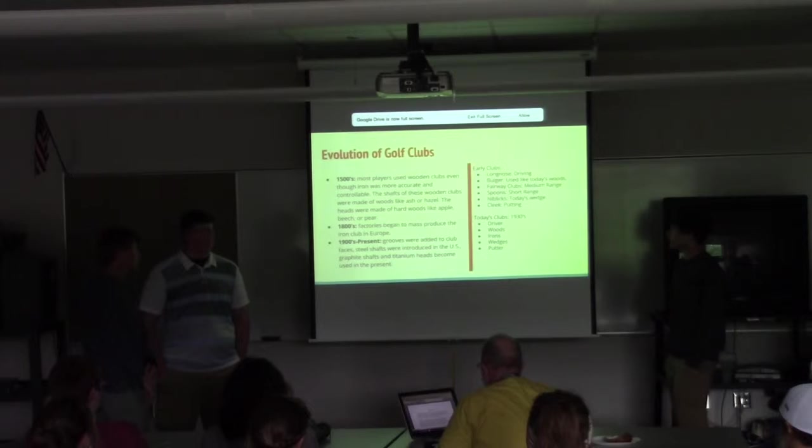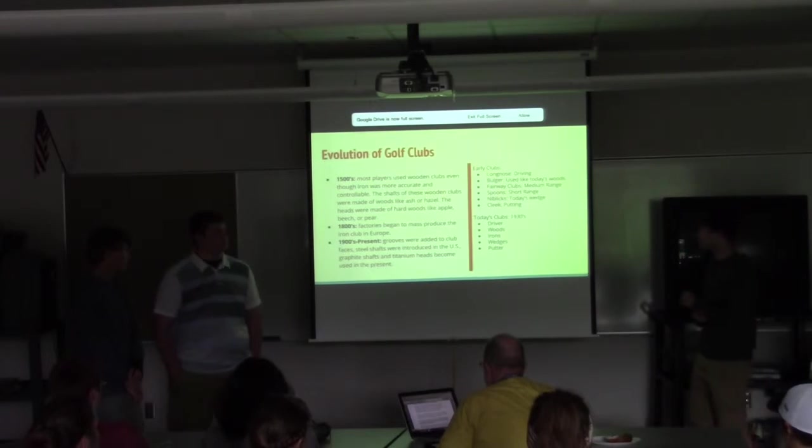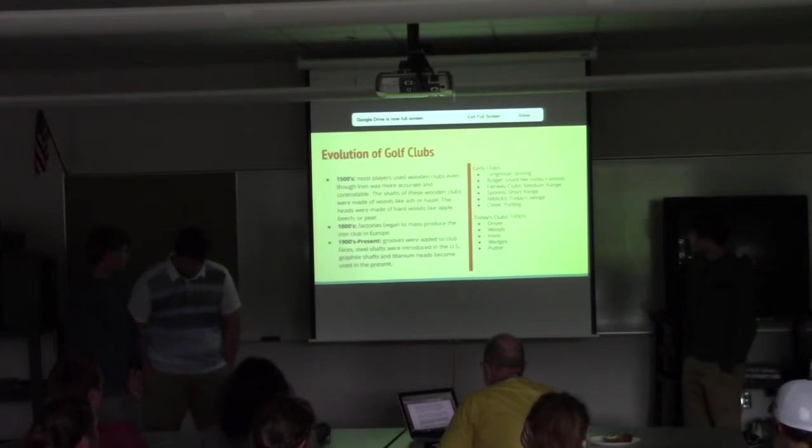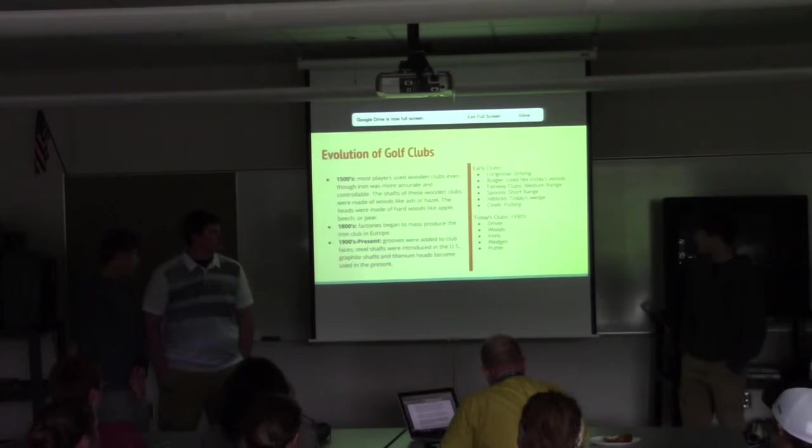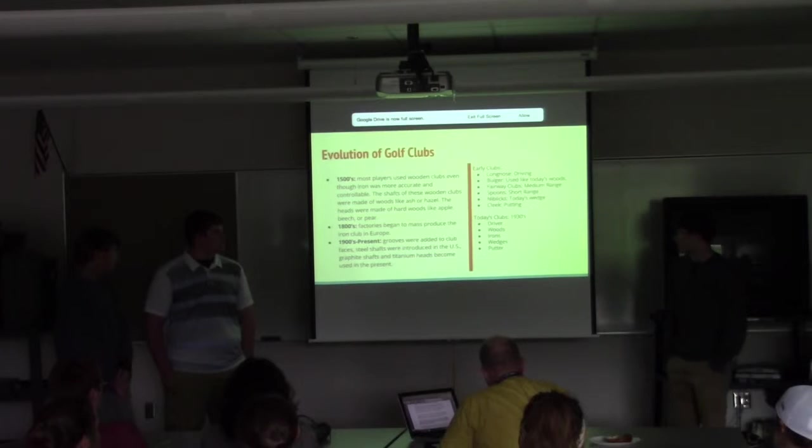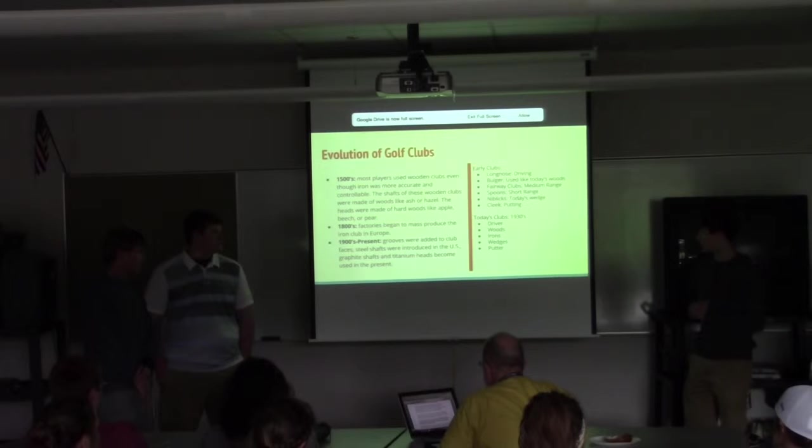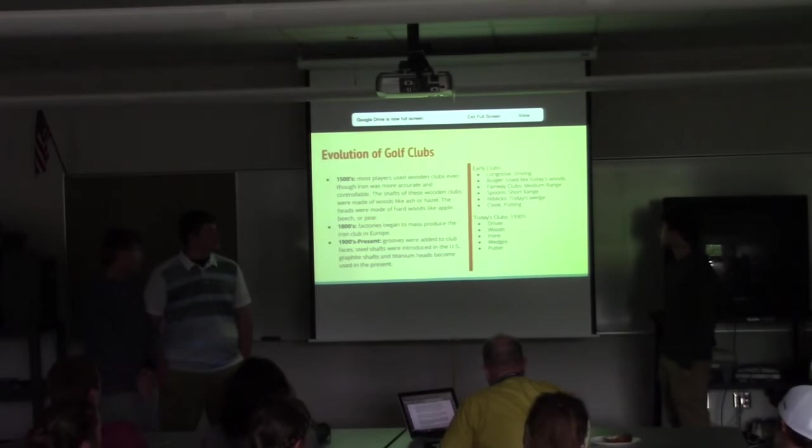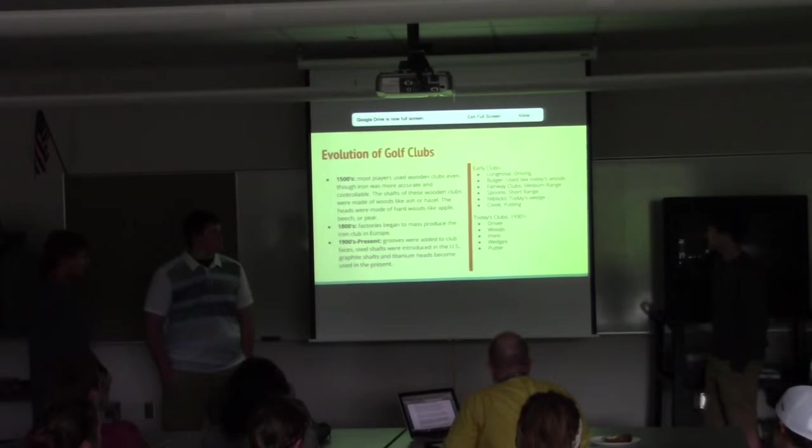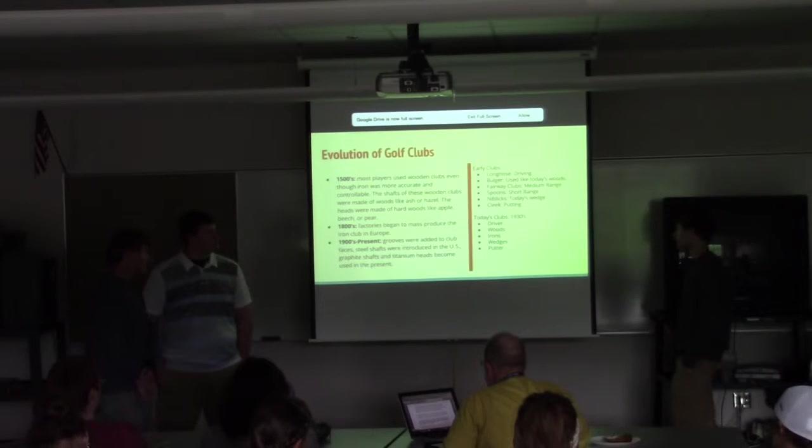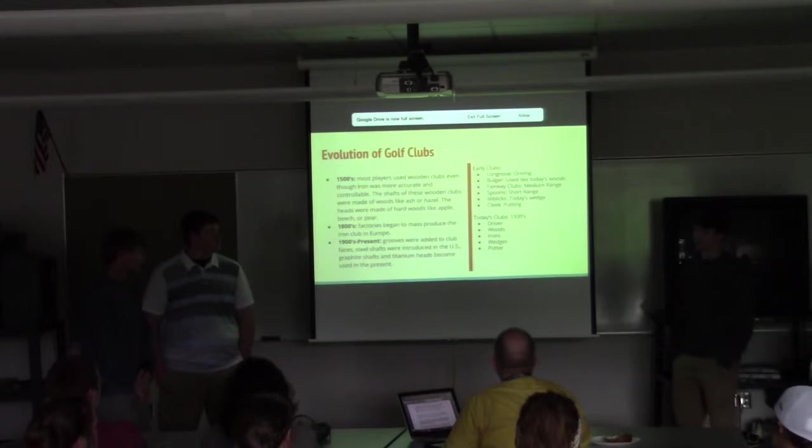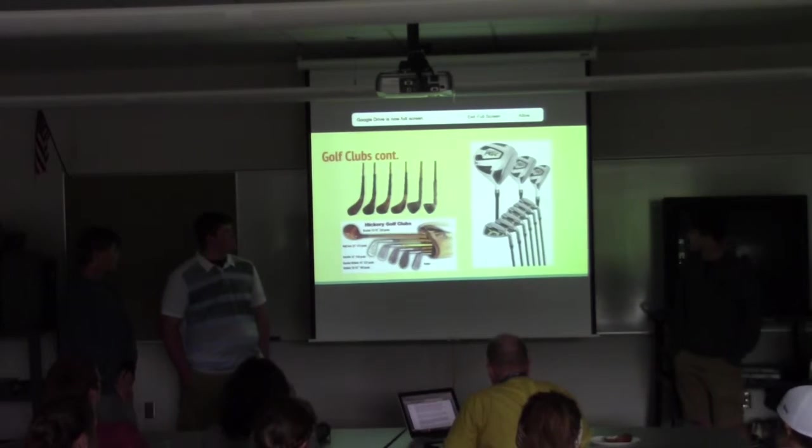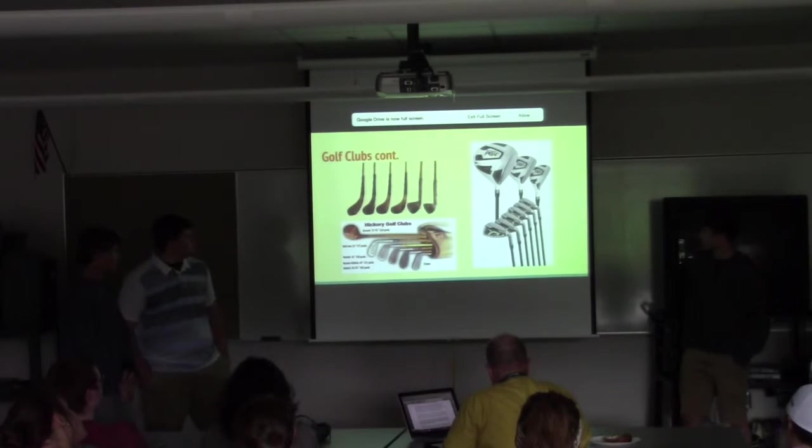The evolution of golf clubs. In the 1500s, most of the players used wooden clubs even though iron was more accurate, but it was harder to get at the time. They were made of woods like apple and beech and pear, which are harder woods. In the 1800s, industrialization allowed the mass production of iron clubs in Europe. From 1900s to the present, grooves were added to the club faces to allow for more spin on the ball, and steel shafts were introduced as well as graphite shafts and titanium heads. These are just the names of the earlier clubs - the nowadays driver is what's called the Longos, the fairway woods were called Bulgers, irons were called fairway clubs, and like your wedges and short irons were called spoons and niblicks, and then your putter was called a cleat. Those are pictures of the older clubs, and these are an example of the newer clubs today.